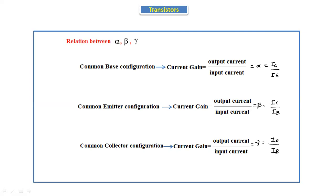Whenever we see IC by IE, we can write directly alpha. If it is IC by IB, that is beta. And IE by IB, that is gamma. So these are the current gain formulas. Now by using this we can relate alpha, beta, and gamma.